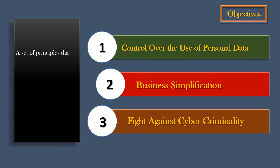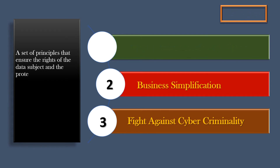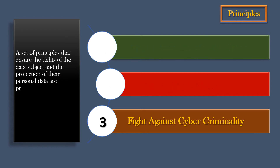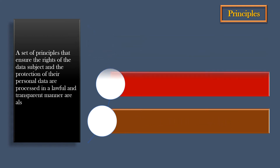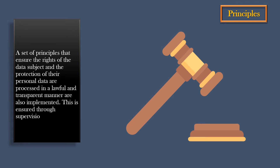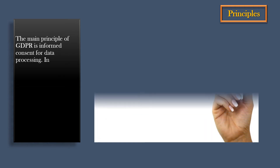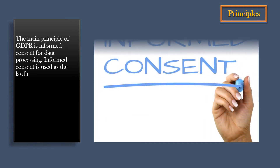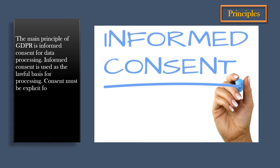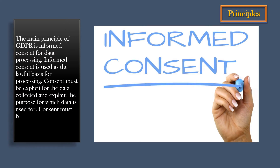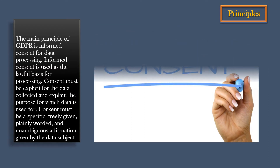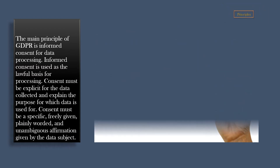A set of principles that ensure the rights of the data subject, and the protection of their personal data, are processed in a lawful and transparent manner, are also implemented. This is ensured through supervision by independent supervisory authorities at the national level. The main principle of GDPR is informed consent for data processing. Informed consent is used as the lawful basis for processing. Consent must be explicit for the data collected, and explain the purpose for which data is used. Consent must be specific, freely given, plainly worded, and unambiguous affirmation given by the data subject.